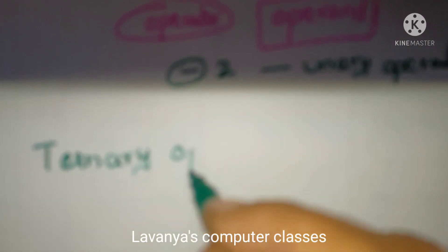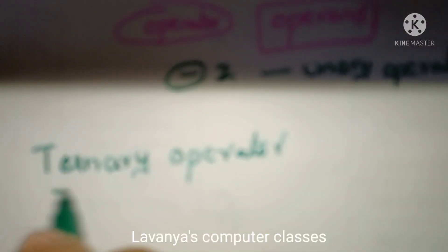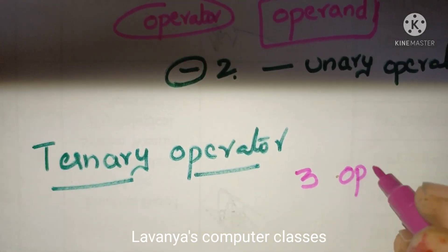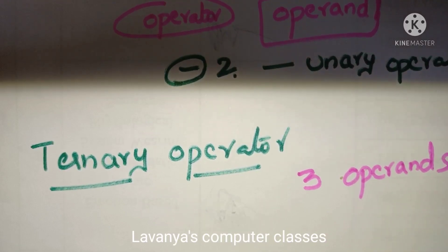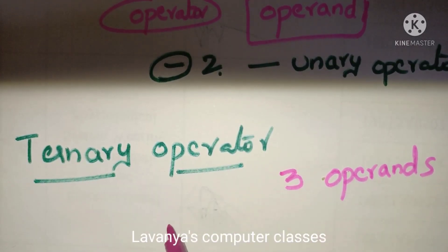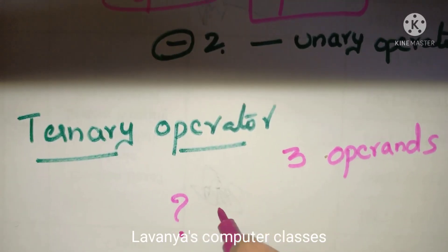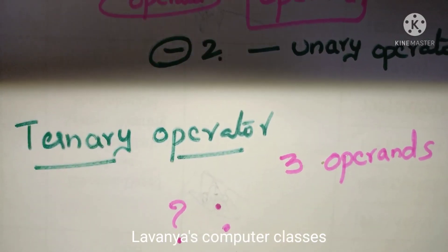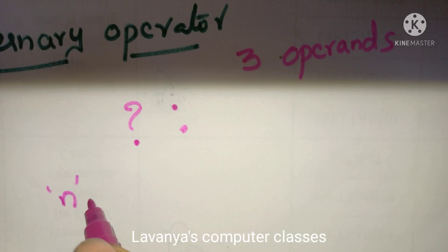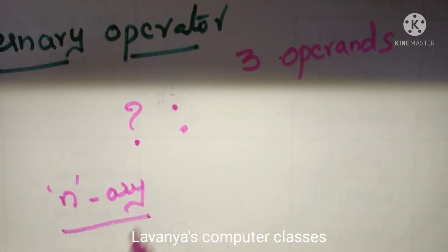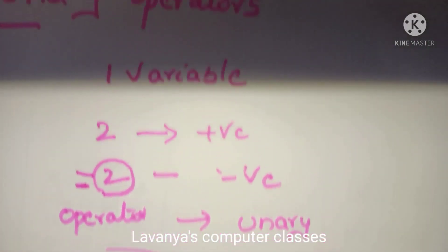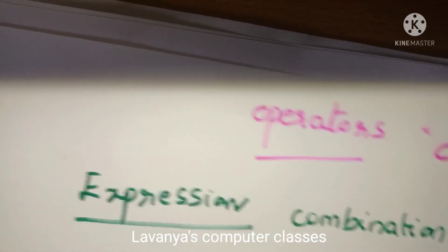Now we go for ternary operator. Ternary means three — any operator working on three operands is called a ternary operator. In C language, the question mark colon ( ?: ) is the ternary operator. It is the only ternary operator in C language, and I will explain it in the next video. N-ary operator means any operator working on any number of operands other than one, two, or three.